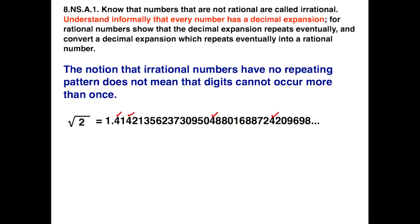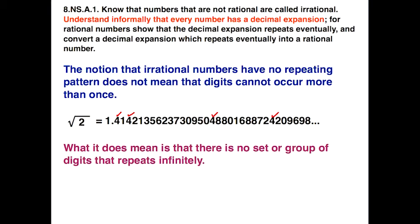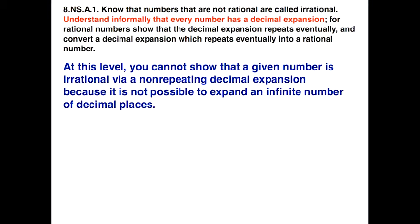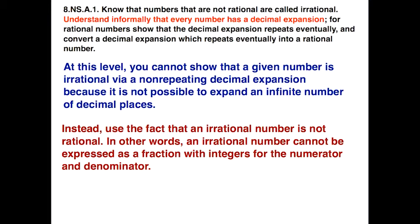For example, in the square root of 2, we have the digit 4 that appears several times, but it's not in any type of repeating pattern. What this idea of repeating digits means is that there is no set or group of digits that repeats infinitely. At this level, you cannot show that a given number is irrational via a non-repeating decimal expansion because it's not possible to expand to an infinite number of decimal places. Instead, we need to use the fact that an irrational number cannot be expressed as a fraction with integers for the numerator and the denominator.